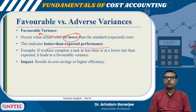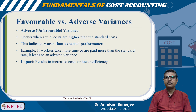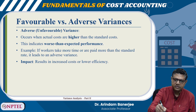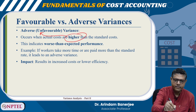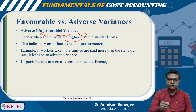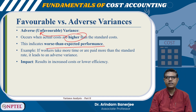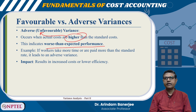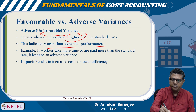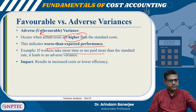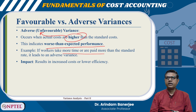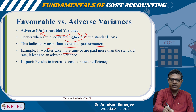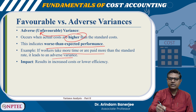If the actual cost is more, then we say it is an adverse variance. Adverse variance is where the actual costs are higher than the standard costs — it is worse than expected performance. For example, if workers take more time or are paid more than the standard rate, this leads to an adverse variance. The impact is increased costs and lower efficiency.